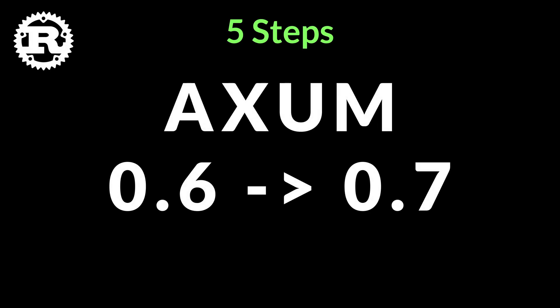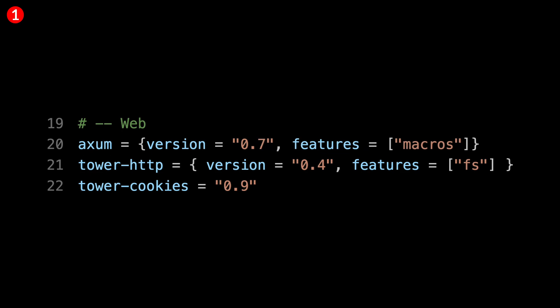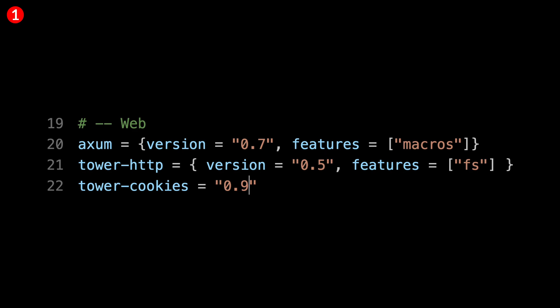Five steps to upgrade your web app from axom 0.6 to 0.7. First, in your Cargo.toml, update axom from 0.6 to 0.7, Tower HTTP from 0.4 to 0.5, and if you use tower-cookies, from 0.9 to 0.10.